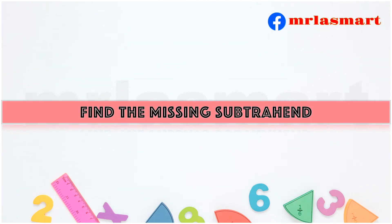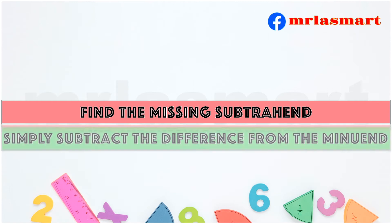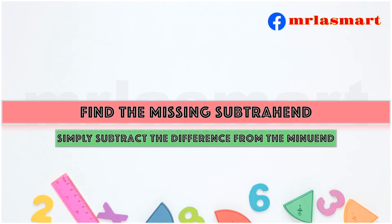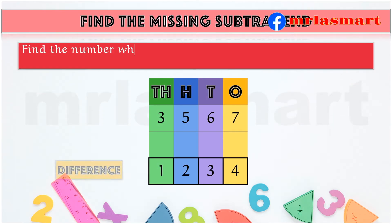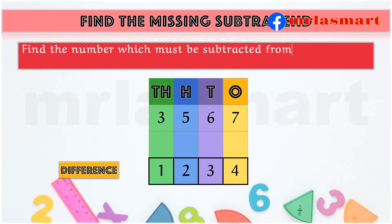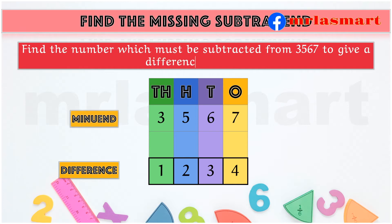Find the missing subtrahend. Simply subtract the difference from the minuend. Find the number which must be subtracted from 3567 to give a difference of 1234.